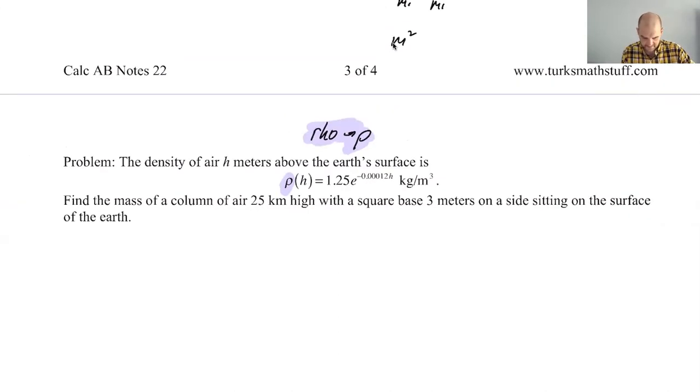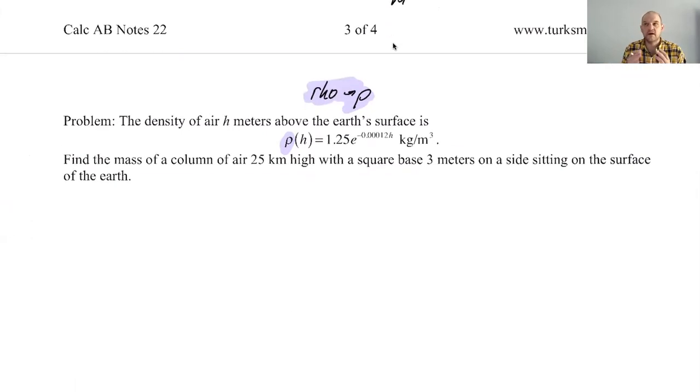So rho of h is 1.25e to the negative 0.0012h kilograms per meter cubed. So the per meter cubed is a clue, but somehow we have to get volume out of our integral. We have to do something where we're ending up with meters cubed. So let's see if we can do this.